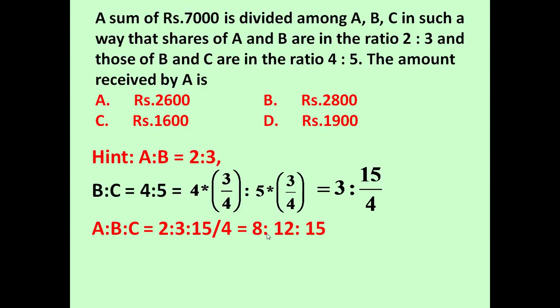If we multiply it by 4, it will become 8:12:15. If we add these three, it will become 8 plus 12 plus 15, which equals 35.